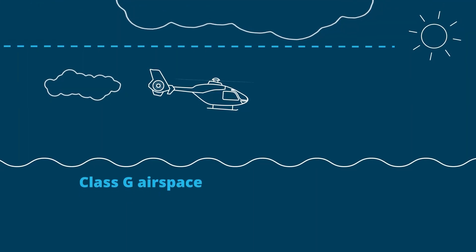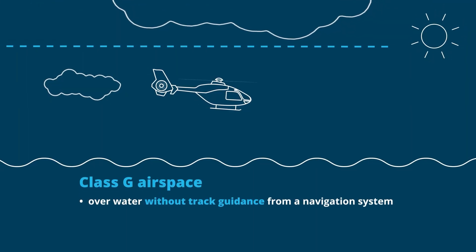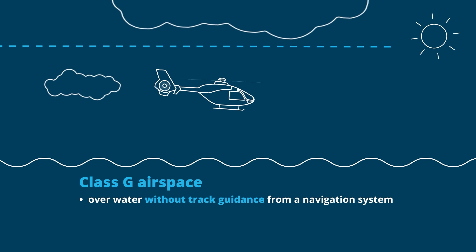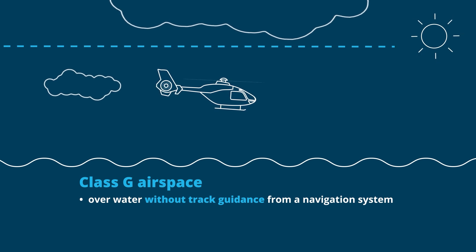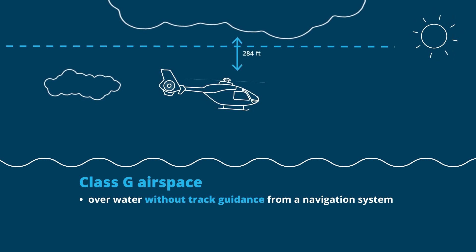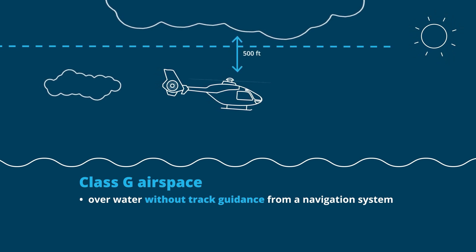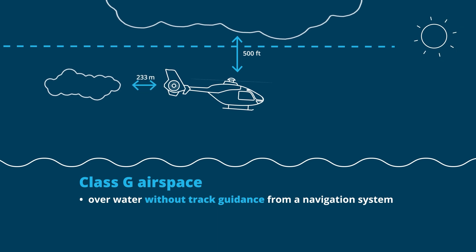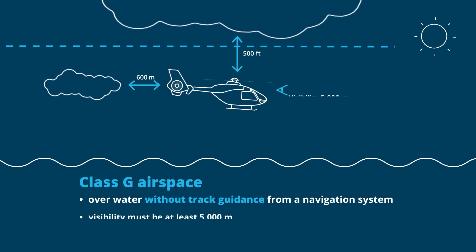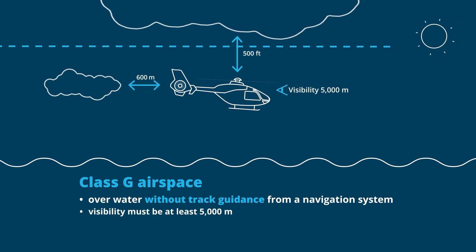In daylight hours, when flying over water without a navigation system providing guidance, you must be 500 feet from cloud vertically and 600 meters horizontally, with visibility of at least 5,000 meters.